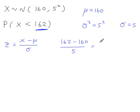That gives you 2 over 5, which is 0.40. When you're working out these z-values, you should round them to two decimal places exactly because that's the accuracy of the probability tables.